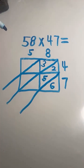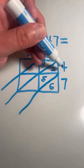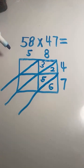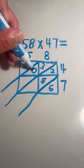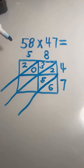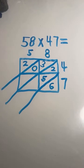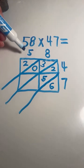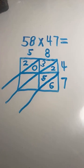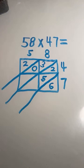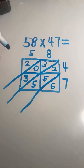Next we're going to multiply 5 times 4. The answer is going to go in this square. 5 times 4 equals 20, so 2 in the top triangle, 0 in the bottom triangle. There's an answer within every square, but each digit within our answer goes in a separate triangle. Last, we're going to multiply 5 times 7. 5 times 7 equals 35, so 3 in the top triangle, 5 in the bottom triangle.